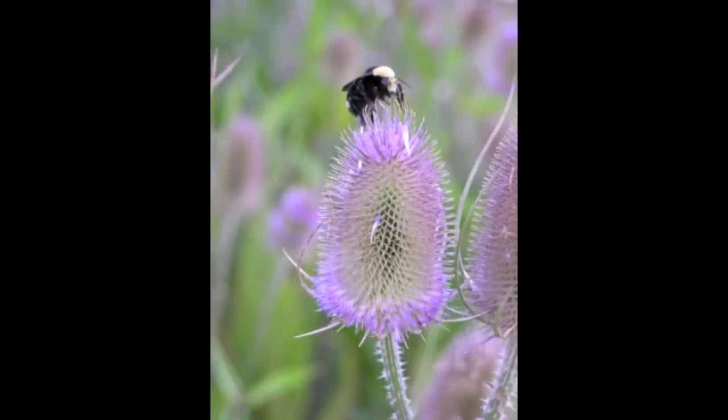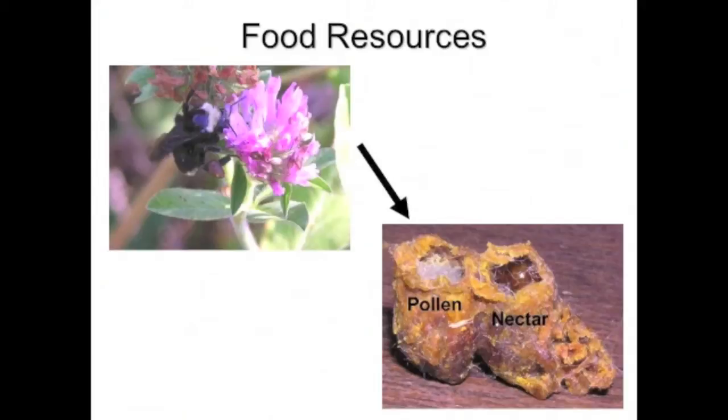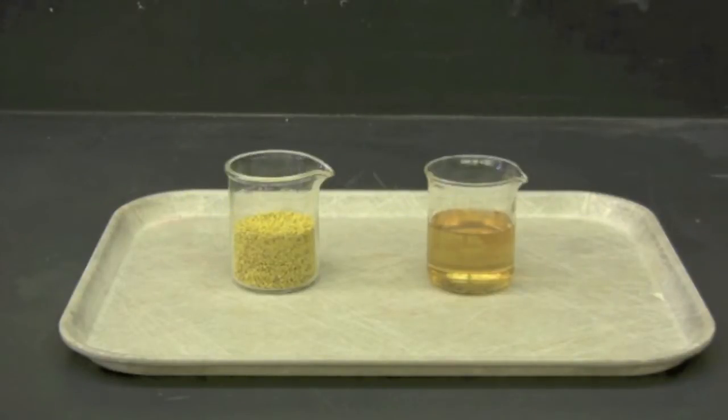Bumblebees need both pollen and nectar to survive. You will need to provide both of these resources for your queen. Bees need a continuous supply of both pollen and nectar, which they can obtain by visiting flowers. You will need to provide both of these food resources to your queen and the developing colony until it reaches a large enough size and the bees can forage on their own.